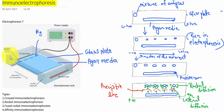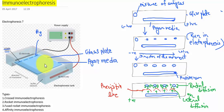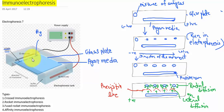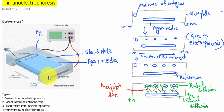You can see in this picture — this is the electrophoresis tank. This is the negative electrode and this is the positive electrode. These are the wells. This is the glass plate, and when you pour the agar media that becomes the agar plate. You need to puncture the plate and make some wells so that you can pour the antigen solution. The direction of movement is from the negative electrode to the positive electrode.